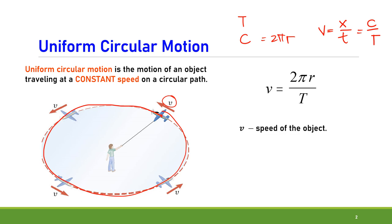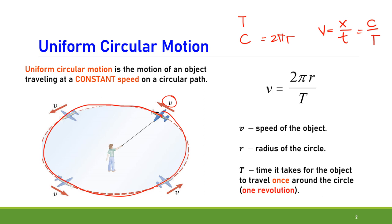In this formula, v is the speed of the object expressed in meters per second or centimeters per second, π is a constant, r is the radius of the circle, and T is the time it takes for the object to travel once around the circle, or one revolution. Period is also related to frequency, which is the number of revolutions in one second. Period equals 1 divided by frequency, or the reciprocal of the frequency. Therefore, 2πr over T can also be written as 2πr multiplied by the frequency.